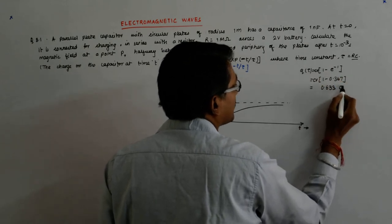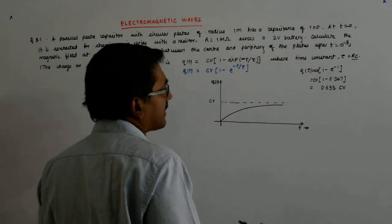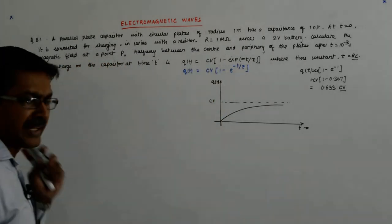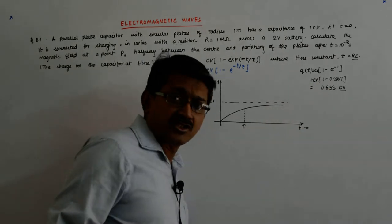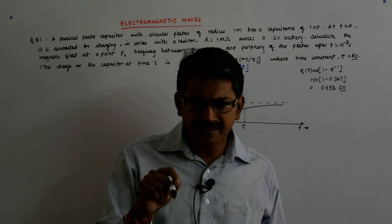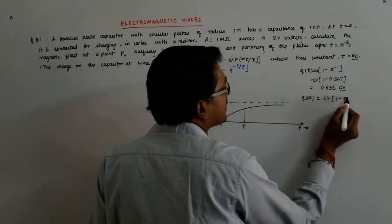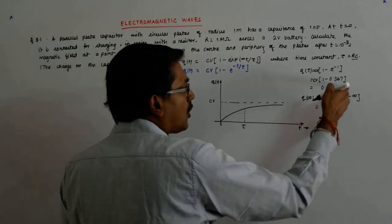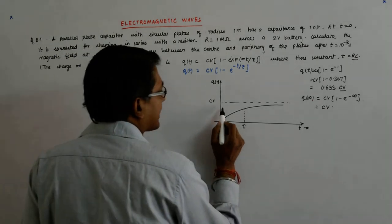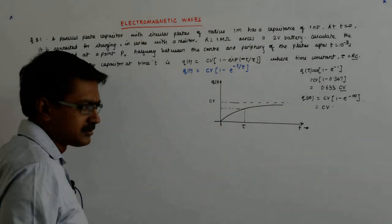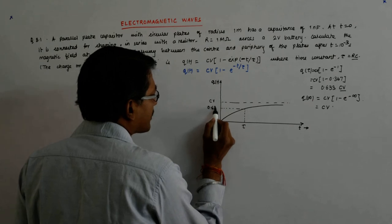That equals 1 minus 0.367, which is 0.633. This is CV into that, which is CV times 0.633. C is 1 nanofarad and V is a constant. So at T equal to tau, you rise to 63.3% of the maxima. Q infinity at the steady state is CV.